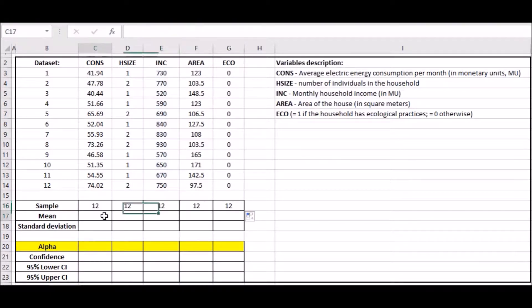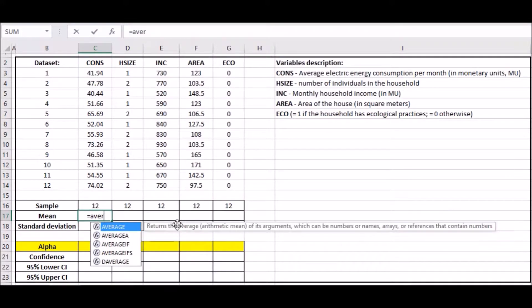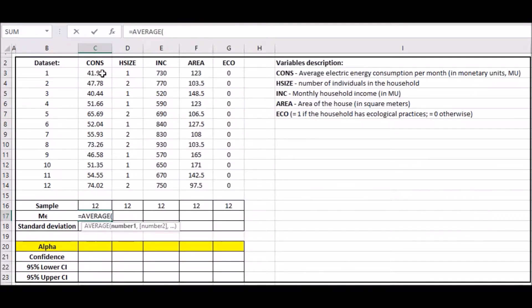Next is the mean. Press equal and type the word AVERAGE, just the first few letters, and tap the Tab key. Then highlight the same set.